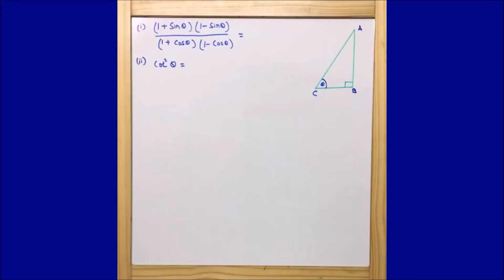As per this question, we need to find out the value of (1 + sin θ)(1 − sin θ) / (1 + cos θ)(1 − cos θ), and for the second part we also need to find out cot squared θ. As per this question, it is given that cot θ = 7/8.